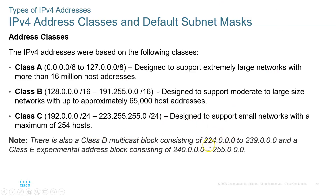Class D is for multicasting — sending data to more than one specific device in a LAN, not everybody (that would be broadcast). The first byte range for Class D is 224 to 235. Class E, with first byte 240 to 255, is for internet experimentation. Class D and Class E are never used for hosts or communications — only Classes A, B, and C are used for that.